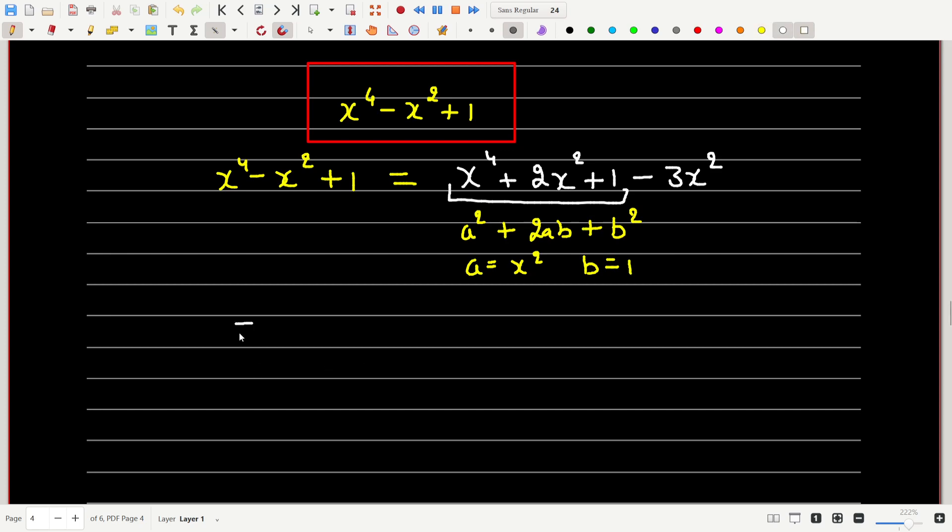So now let's write this as a plus b whole square because a square plus 2ab plus b square is equal to a plus b whole square. So this can be written as x square plus 1 whole square minus 3x square.